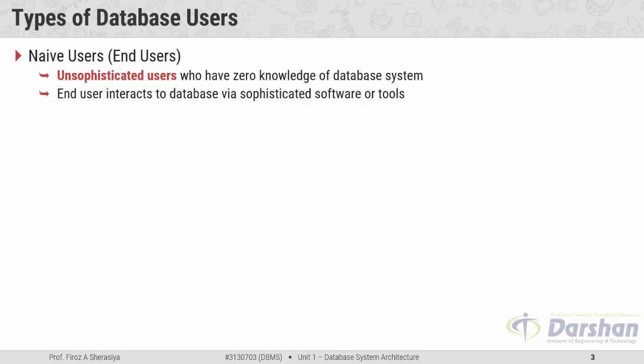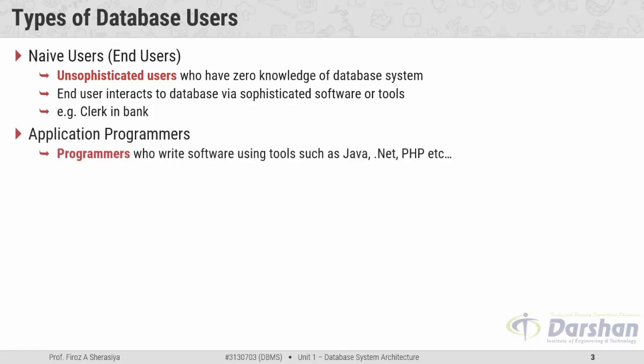An example of naive users would be customers in a bank. The next type is application programmer. In this category, programmers or developers who write software using tools such as Java, .NET, or PHP come under this category. They interact with the database by means of DML queries, that is data manipulation language queries. An example of application programmers would be software developers.